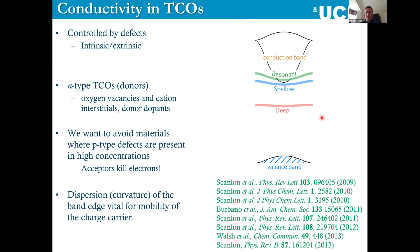We've spent the last ten years working on the defect chemistry of transparent conducting oxides. Just when we thought we understood how both N-type and P-type systems work, in the last four years we stumbled upon a new doping regime, which I'm going to explain in the second half of this talk.